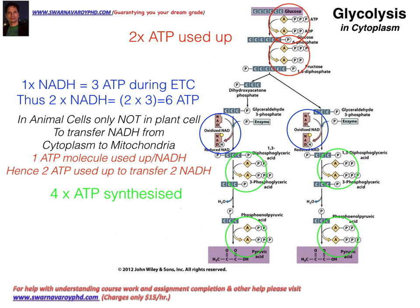In animal cells only — not in plant cells — transferring NADH from the cytoplasm to the mitochondria requires two ADP molecules. Remember that glycolysis occurs in the cytoplasm in both animals and plants, but in animal cells one ADP is used up to transfer one NADH, so two ADP molecules are used up to transfer two NADH.